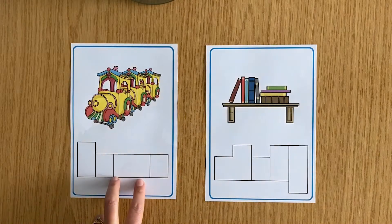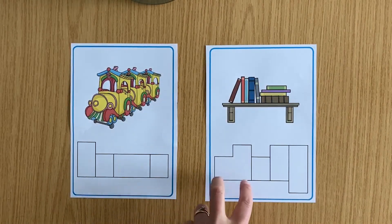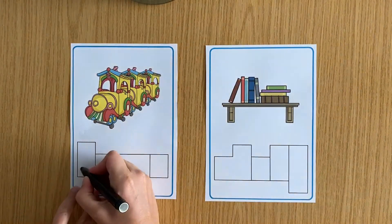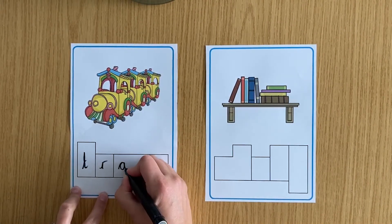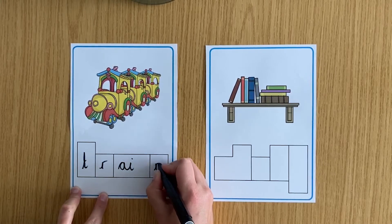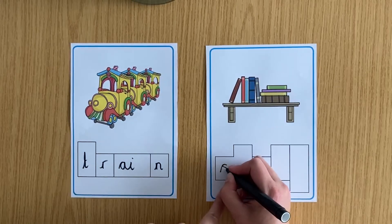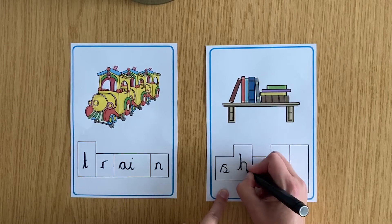Some phoneme frames have bigger boxes. This is to show your child that there are two letters making one sound. In this example you have the AI making the A sound in train and the SH making the SH sound in shelf.